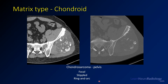In contrast to osteoid, chondroid matrix is typically described as focal, stippled, or ring-and-arc. This is a chondrosarcoma of the pelvis extending off the iliac into the posterior gluteal musculature. You see small dots of calcification and arc-like structures — that's where bone is forming around cartilage. Burn arcs and rings into your memory because you'll see that on tests quite a fair amount.